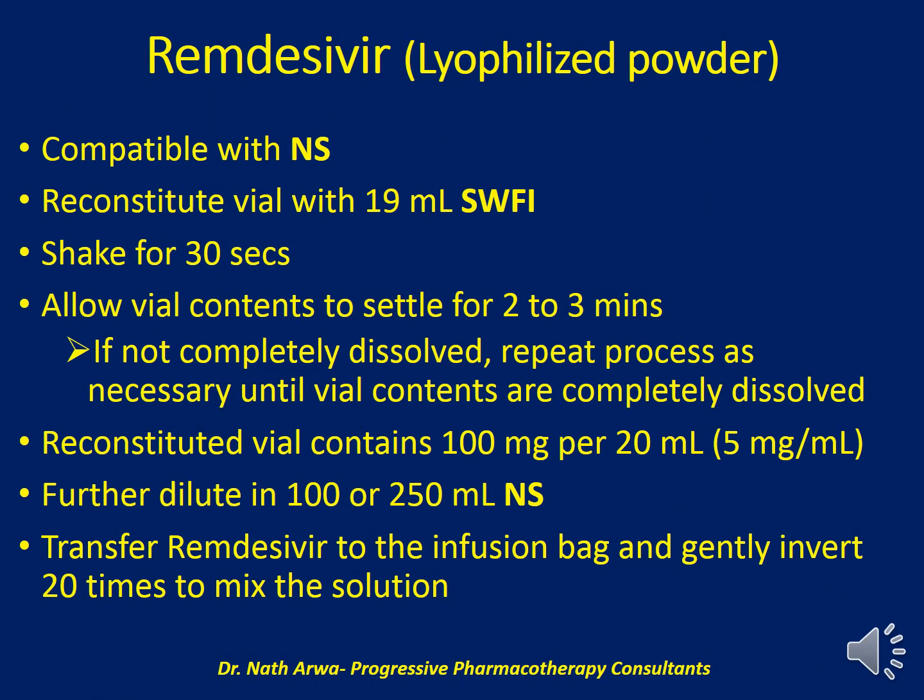For Remdesivir lyophilized powder, the compatible solution remains normal saline. Reconstitute with 19 ml of sterile water for injection, shake for 30 seconds to dissolve, then allow the vial contents to settle for 2 to 3 minutes. If the contents haven't fully dissolved, repeat the process until the solution is clear. The reconstituted vial contains 100 mg in 20 ml at a concentration of 5 mg per ml, and should be further diluted in 100 to 250 ml of normal saline. Transfer to the infusion bag and gently invert 20 times to homogenize thoroughly.